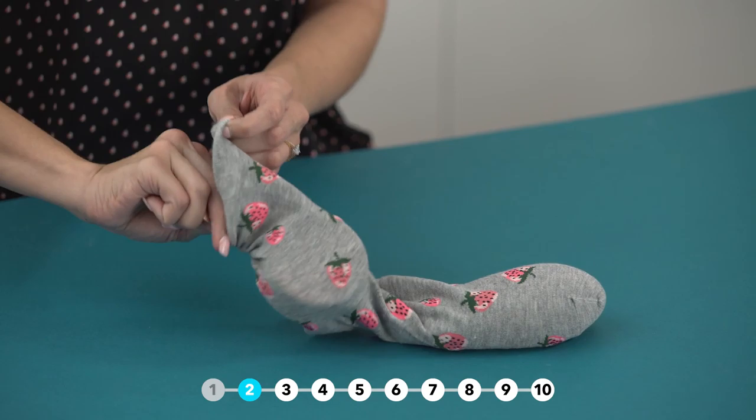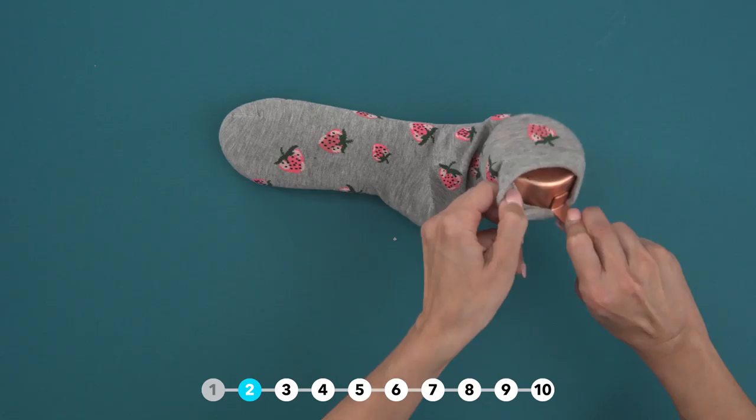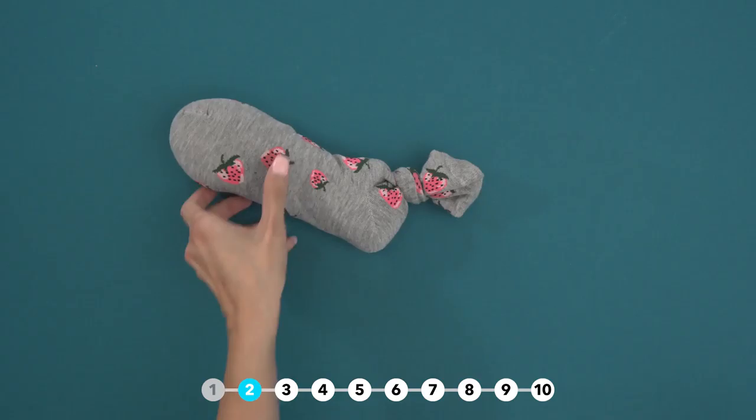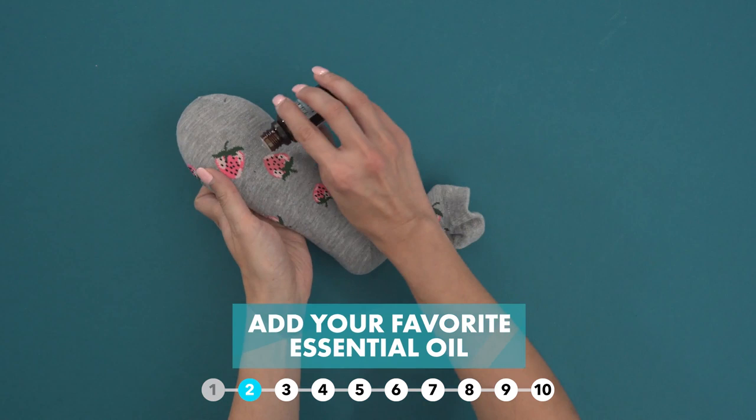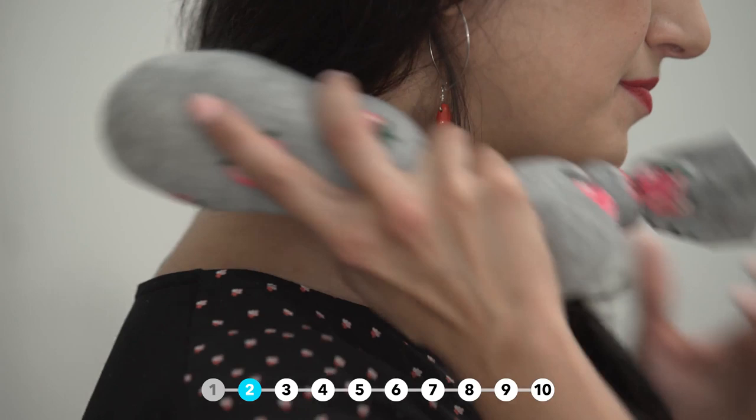Make a heating or cooling pack with a clean sock and a few cups of rice. You can add essential oils to match your mood. Just two minutes in the microwave or overnight in the freezer and you're good to go.